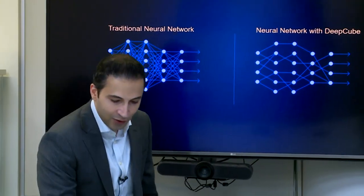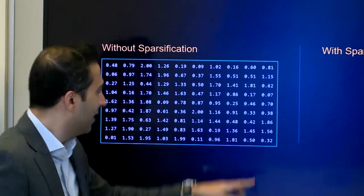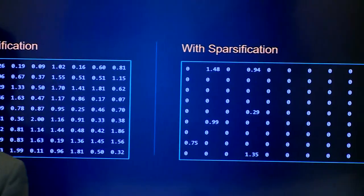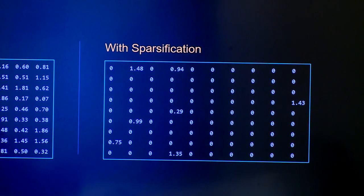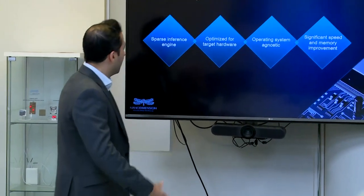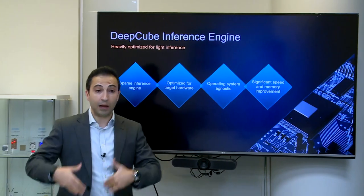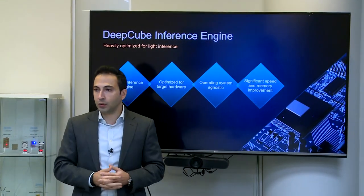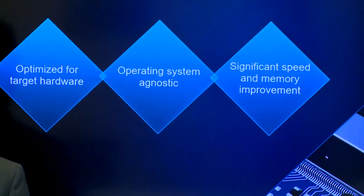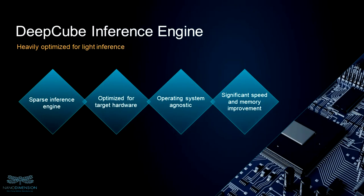But sparsity alone doesn't solve the problem. If you take a sparse model and run it with standard deep learning frameworks, you get no speed-up and no memory reduction — because all the zeros are still in memory and part of computation. So at DeepCube we developed an entire deep learning framework for deployment that removes zeros and performs sparse inference. It can optimize itself for any hardware — for example, for our own hardware within Nano Dimension's Dragonfly family. It is operating-system agnostic. The bottom line: dramatic speed and memory improvement, allowing us to take large neural networks and run them on devices themselves instead of the cloud.